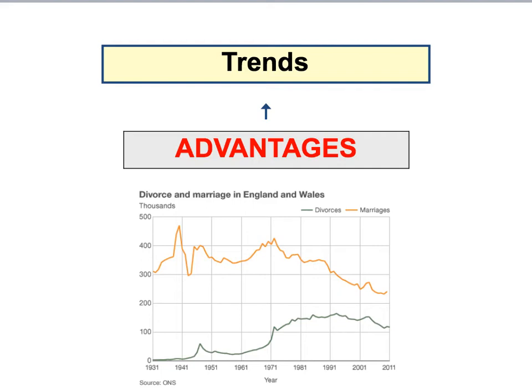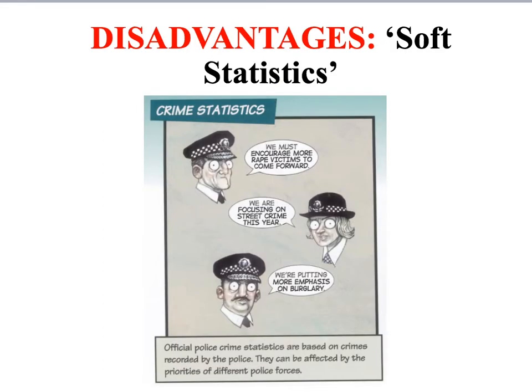Another obvious advantage of using government statistics is they're conducted on a regular basis. However, even though official statistics are often an invaluable source of data for sociologists, there are certain types that need to be treated with a degree of caution. These are what we might call soft statistics, which refer to phenomena that are much more difficult to measure and define in a clear-cut way.